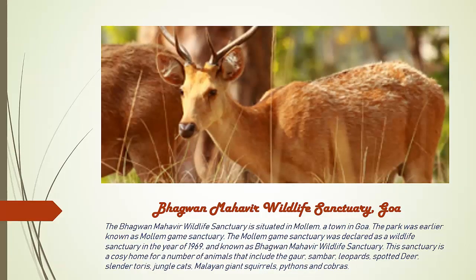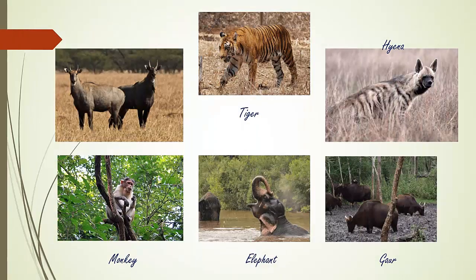Bhagwan Mahavir Wildlife Sanctuary is situated in Mollem, a town in Goa. This sanctuary is home to a number of animals including Gaur, Sambar, Leopards, Spotted Deer, and more. This sanctuary was declared in the year 1969. Examples of wildlife include Boar, Tiger, Hyena, and Monkey.